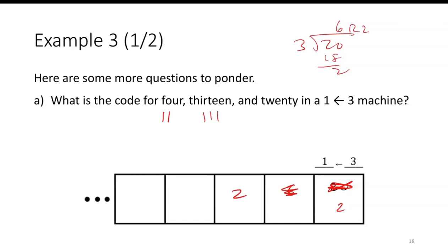Now, if I have six dots, I can do two explosions. At this point, there are no more explosions I can do. So this is two dots, then zero dots, then two dots in a 1←3 machine.